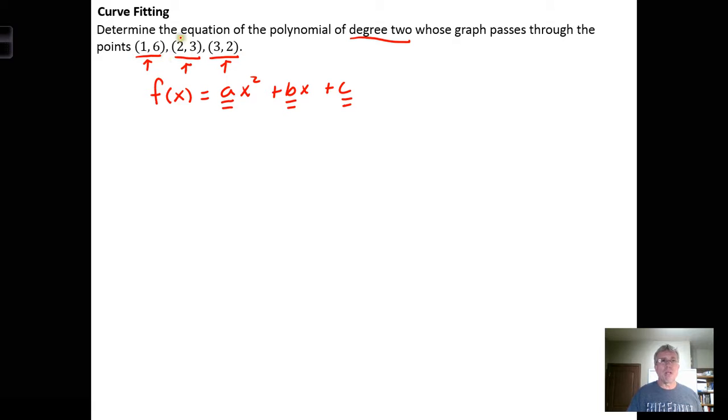We plug each of the points into our function pattern, and from that we generate three equations and construct a matrix. Using the first point, this says the output to the function should be 6 when the input is 1.